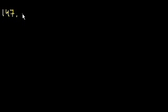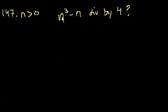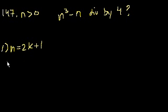Problem 147: if n is a positive integer, is n cubed minus n divisible by 4? My initial reaction is to simplify this as a product of simpler expressions. Statement 1 says n is equal to 2k plus 1, where k is an integer. I don't feel like cubing 2k plus 1 directly, so let's factor: n cubed minus n equals n times n squared minus 1, which equals n times (n plus 1) times (n minus 1).